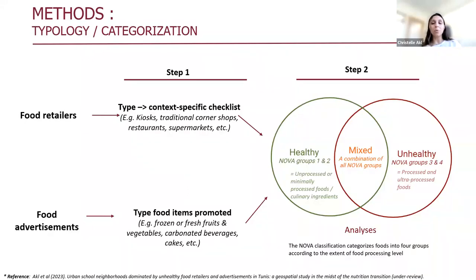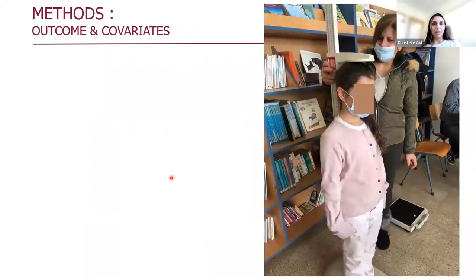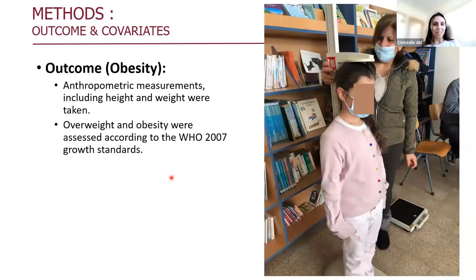We conducted our analysis using the NOVA token categories. However, we do have a more detailed typology and could run all analyses using this more detailed data. For the assessment of our outcome — obesity — anthropometric measurements including height and weight were taken, and overweight and obesity were assessed according to the WHO 2007 growth standards.